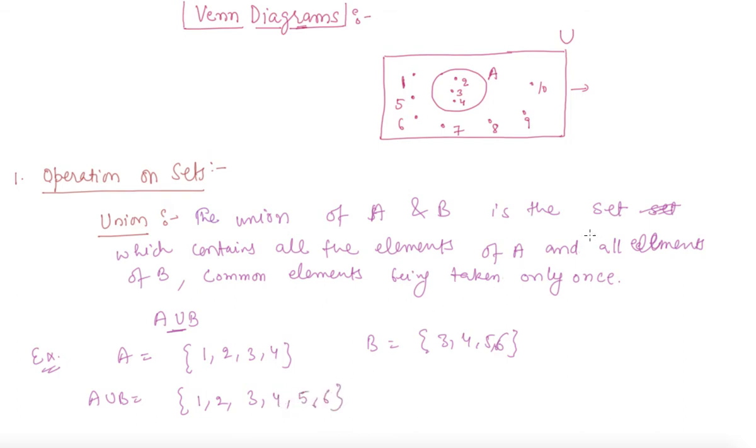All the elements of A and all the elements of B with the common part only once. You can also represent this using Venn diagram.